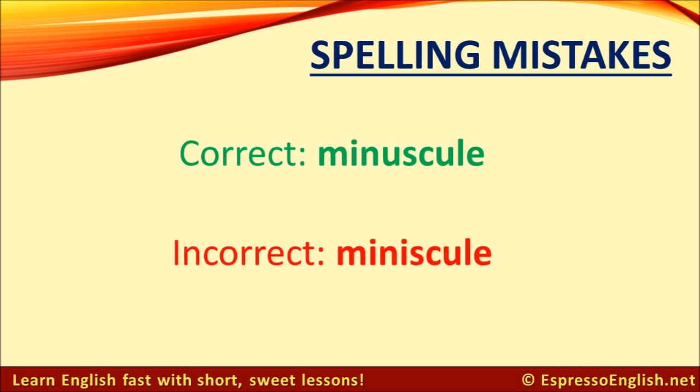Next, we've got the word 'minuscule,' which describes something that is very, very small. It sounds like 'miniscule' when we pronounce it, so you might think it starts with M-I-N-I, because we do use the prefix 'mini' to talk about small versions of things. But 'minuscule' starts with M-I-N-U.